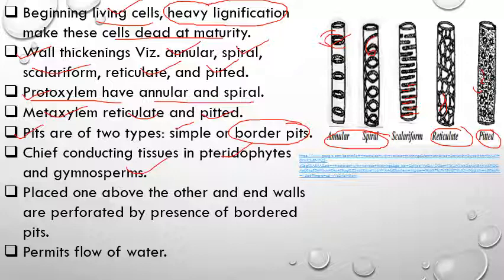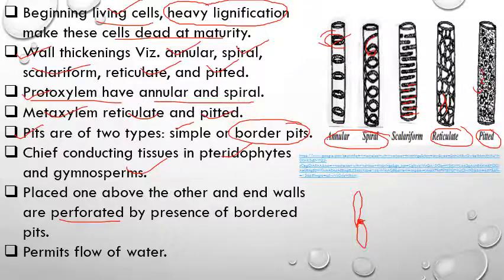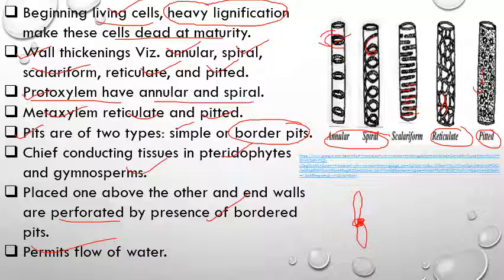Tracheids are placed one over the other, and their end walls with tapering ends are attached to each other. The common walls have small pores through which water transfer occurs. In this way tracheids permit and control the flow of water in plants.